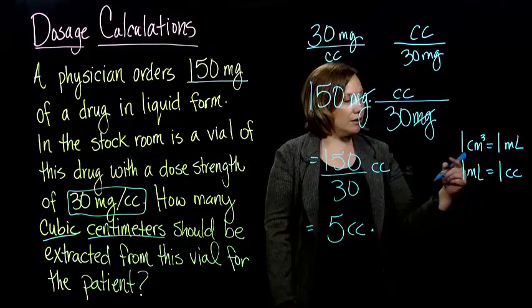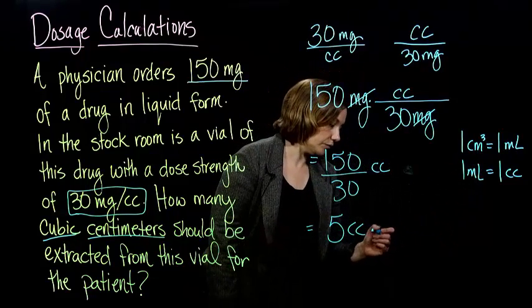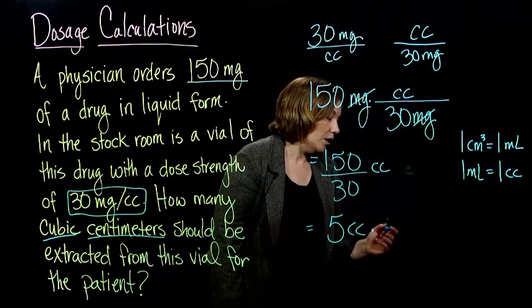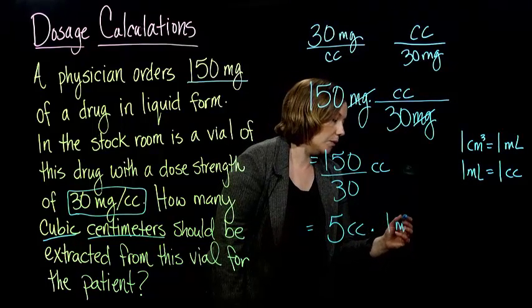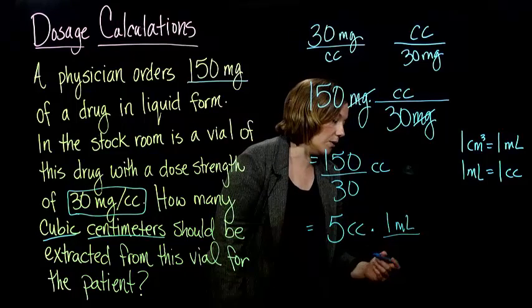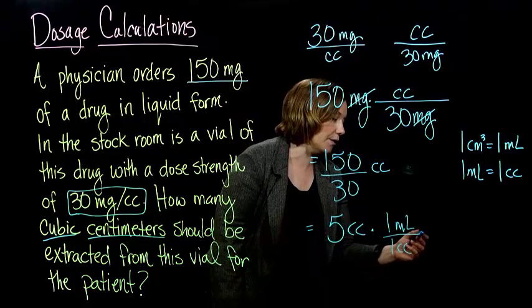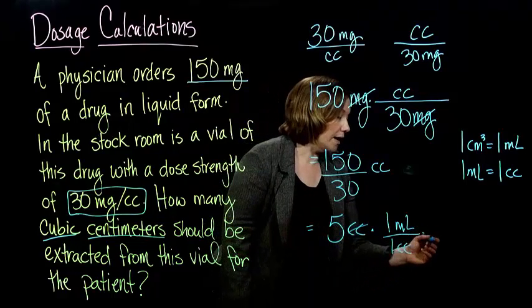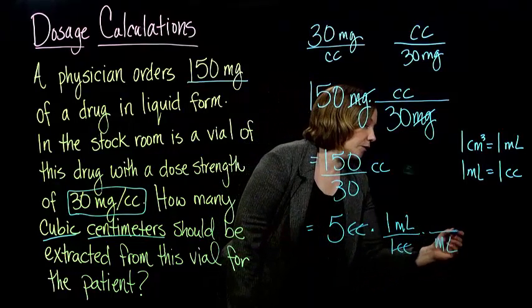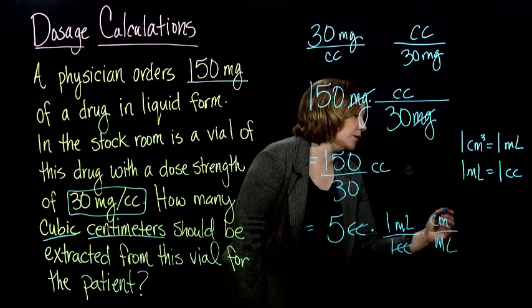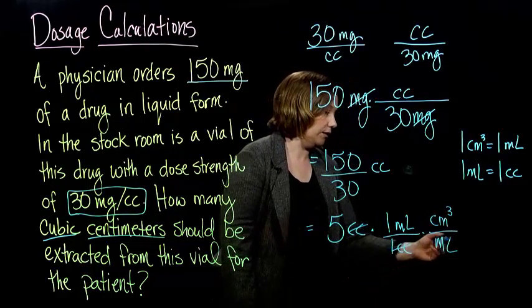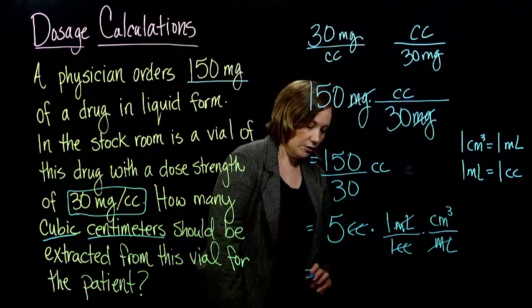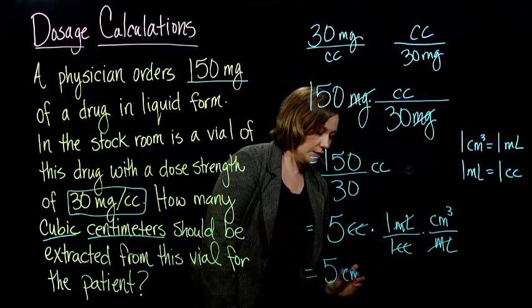First, I'm going to convert to milliliters, and then I'll convert the milliliters to cubic centimeters. I want the milliliters on top because that's what I want to end up with, and I want the cc's on the bottom because I want those guys to cancel out. Then, my second conversion factor to go to cubic centimeters, I want the milliliters to cancel, so I'll put those guys on the bottom, and you end up with 5 cubic centimeters.